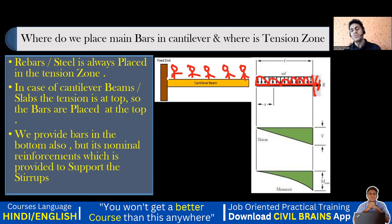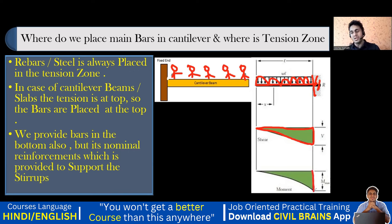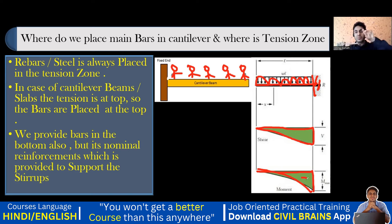If I ask you to draw the shear force diagram and bending moment diagram, the shear force will linearly vary, something like this. And the bending moment diagram — this is wL²/2 — and it is entirely negative. So the entire bending moment is negative in a cantilever beam.